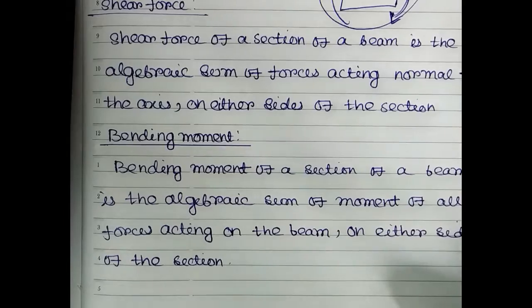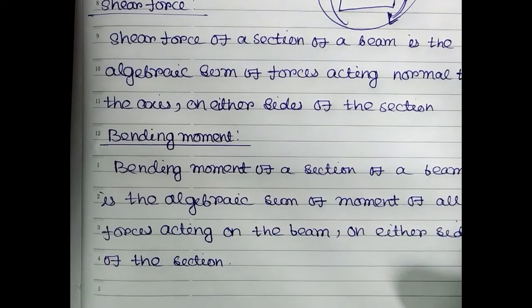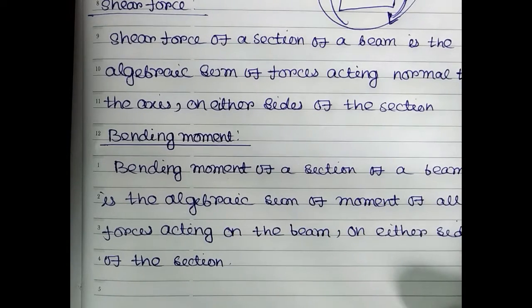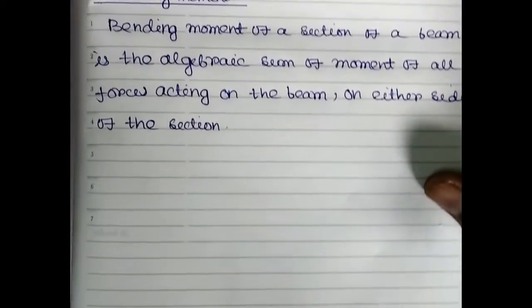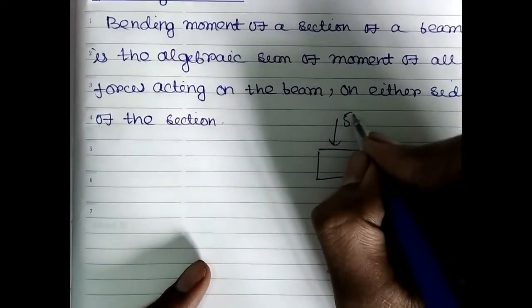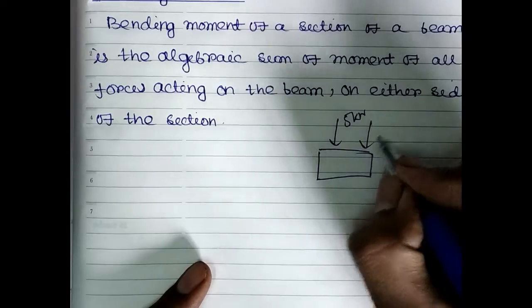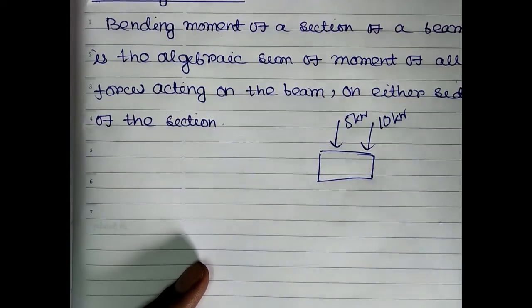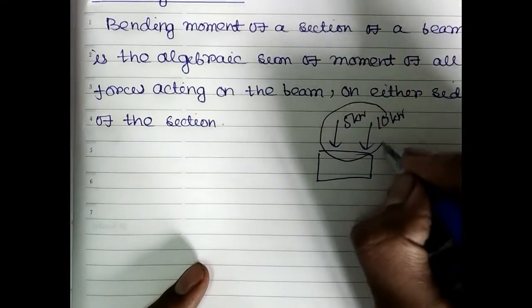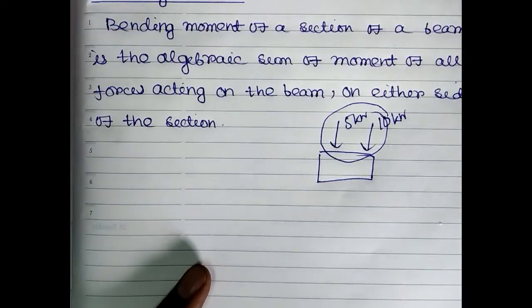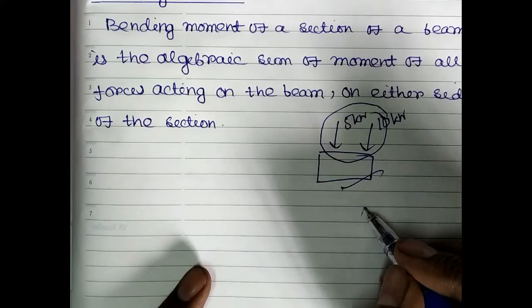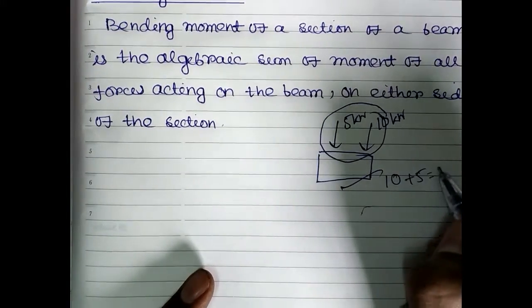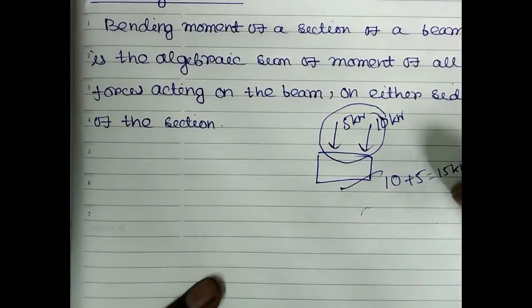What is shear force? Shear force of a section of a beam is the algebraic sum of forces acting normal to the axis on either side of the section. Let's consider this is a section of a beam and a force of 5 kilo Newton and a force of 10 kilo Newton are acting on the section. Shear force is nothing but the algebraic sum of those forces, so the resultant shear force will be 10 plus 5, which is 15 kilo Newton.